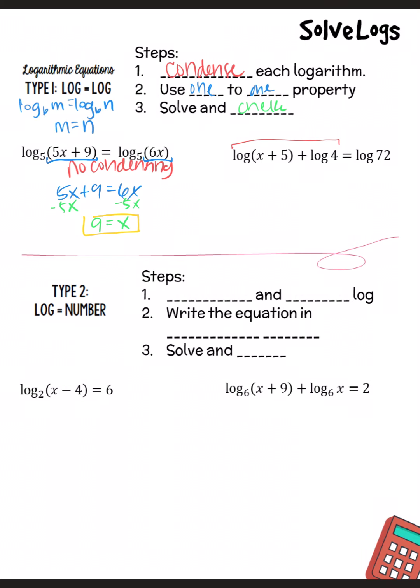Let me show you how to check it. You would put log 5 of 5 times 9 plus 9 equals log base 5 of 6 times 9. And if you did that in your calculator, then you would get 54 equals 54, and that's how you know that 9 does equal X. So if you didn't get the same answer on both sides, then that wouldn't be a solution, and there would be no solutions.